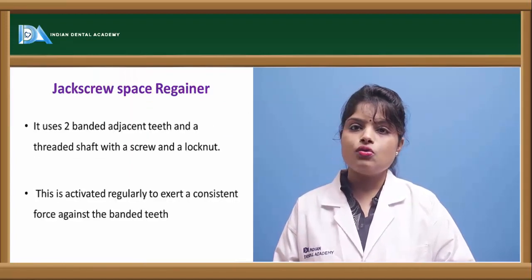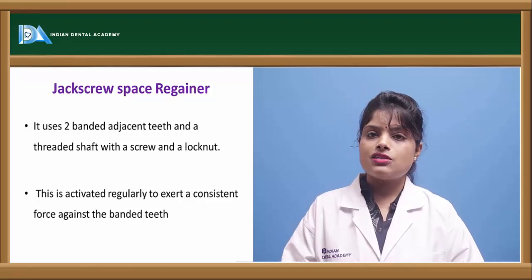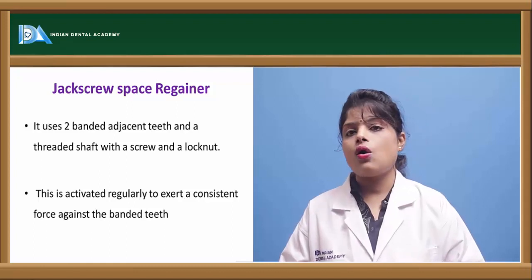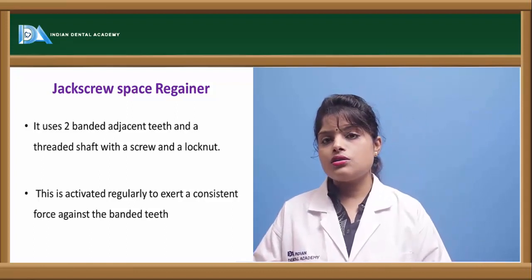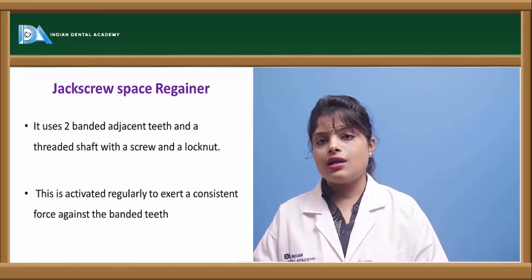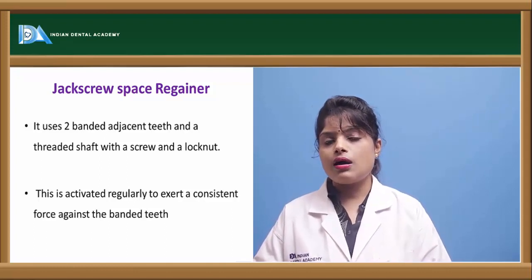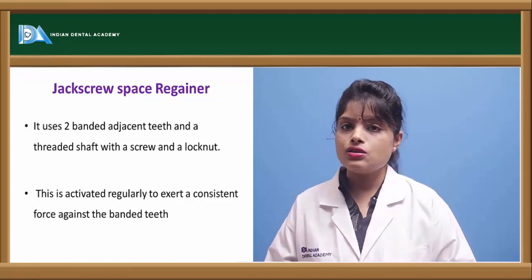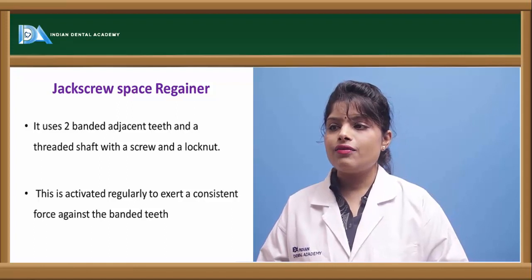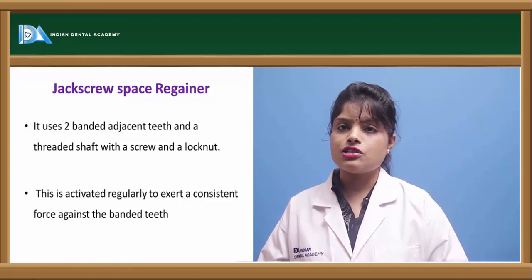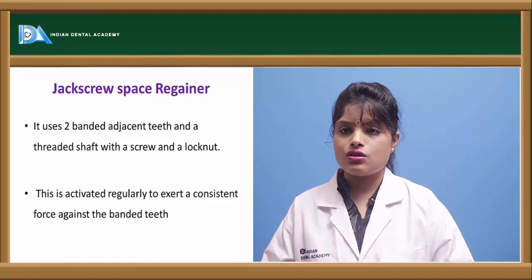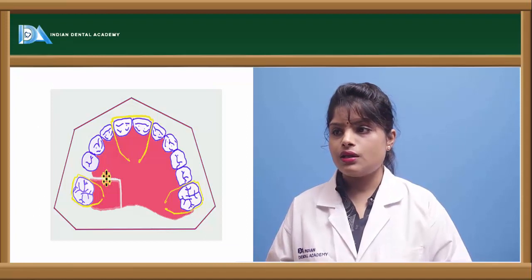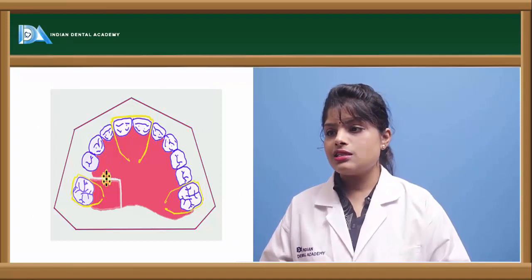Next is the jack screw space regainer. In this, two molars are banded and buccal tubes are attached to the bands. A lock and screw with a threaded shaft is placed inside. By activation of this screw mechanism, the lost space can be regained. This is the jack screw space regainer.